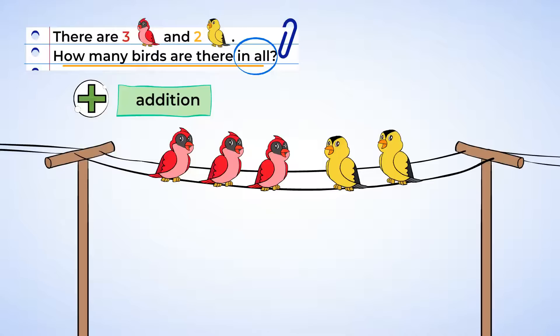So let's write out our equation. We have three red birds plus two yellow birds. Well, we already have a picture and that helps. We can count to find the total number of birds. That's how many birds there are in all.